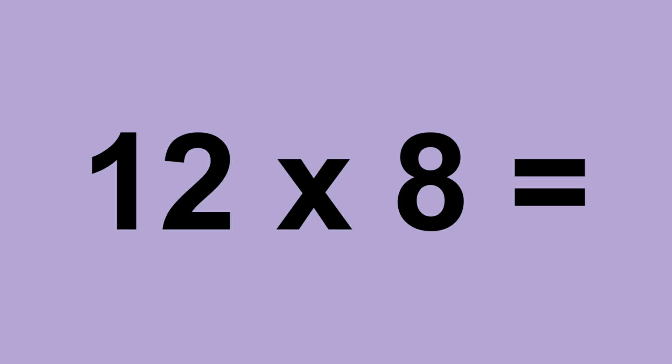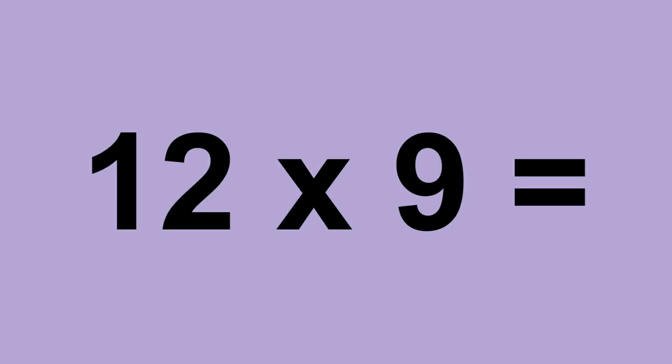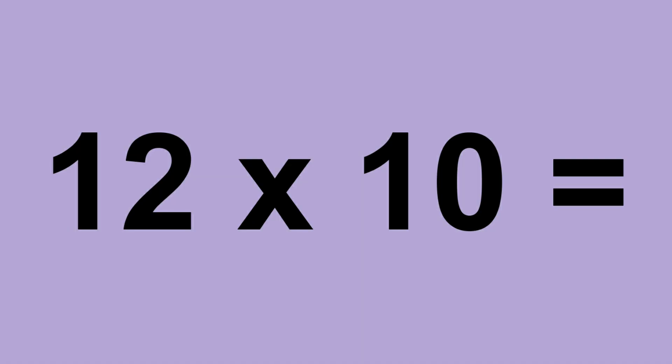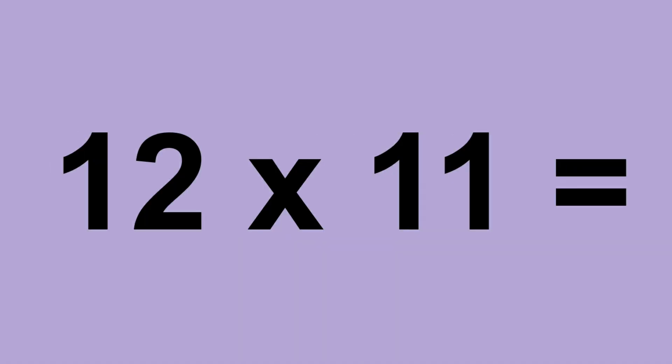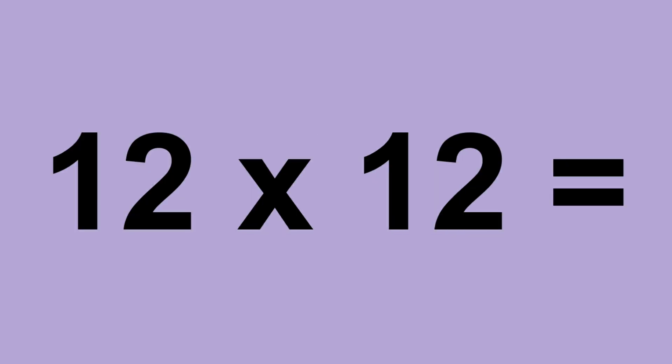Twelve times eight equals ninety-six. Twelve times nine equals one hundred and eight. Twelve times ten equals one hundred and twenty. Twelve times eleven equals one hundred and thirty-two. Twelve times twelve equals one hundred and forty-four.